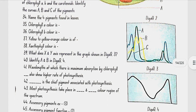The four pigments found in leaves are: chlorophyll A, which is bright or blue-green in colour; chlorophyll B, which is yellow-green; xanthophyll, which is yellow; and carotenoids, which are yellow to yellow-orange.